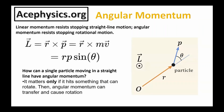Now I want to discuss how to calculate the angular momentum of a single particle about a specified origin of rotation. In physics, the letter L represents angular momentum. L equals R cross P, where R is the radius from the origin of rotation to the location of the particle, and P is the linear momentum. Angular momentum equals R P sine of theta, which equals the radius times the component of momentum perpendicular to the radius.